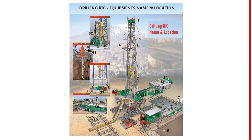Number 22 is the choke manifold. Number 23 is the pipe ramp, also called pipe ram. There is a V-door — an opening in the rig floor — through which drilling pipes, casings, and other drilling tools are hoisted to the rig floor. Number 24 is the catwalk. Number 25 is the pipe rack. Number 26 is the pipes, which are kept on the pipe rack.